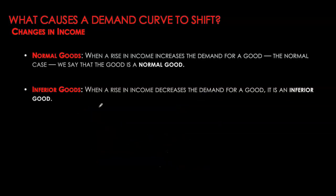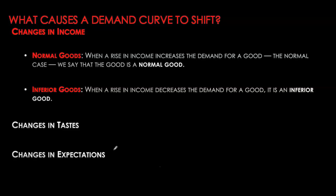Note that all of these shifters arise from the factors listed at the beginning of the class — income, prices of related goods, and preferences. As preferences change over time, that will cause an increase or decrease in demand; at any given price, quantity demanded may rise or fall. Another common reason for a shift in the demand curve is changes in expectations. If I'm expecting higher prices in the future, I might as well buy the good today.